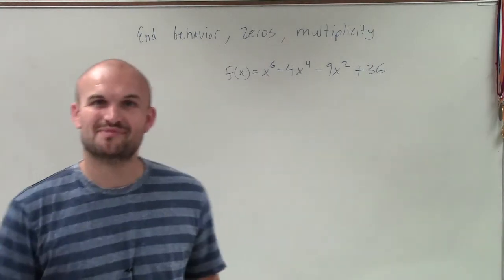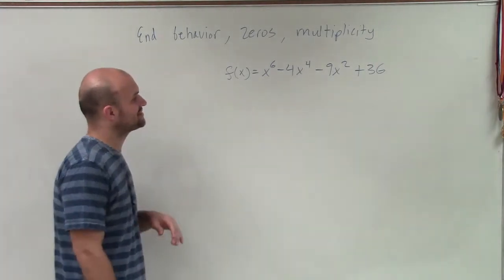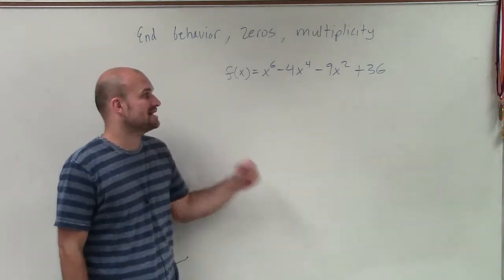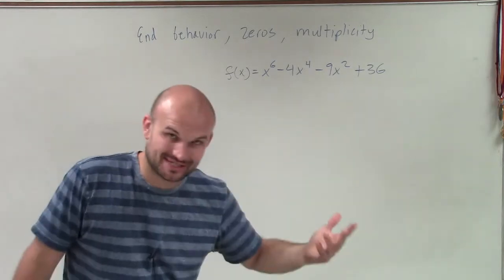We're starting to get into some problems that might be a little fun for us. So what I have here is f(x) = x⁶ - 4x⁴ - 9x² + 36.